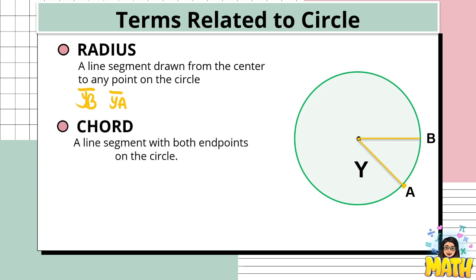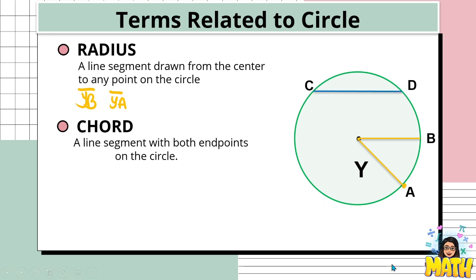Next is what we call the chord. It is a line segment with both endpoints on the circle. For the radius, one endpoint is the center and the other is on the circle, but for a chord, both endpoints must be on the circle — just like points C and D. So segment CD is an example of a chord. Another example: from point C to point E, we have another line segment, and this is also a chord because both endpoints are on the circle.